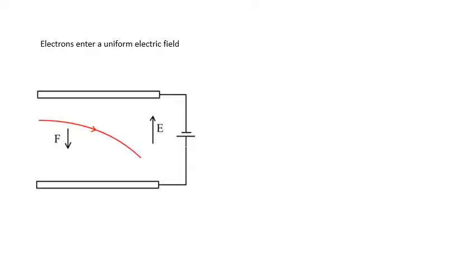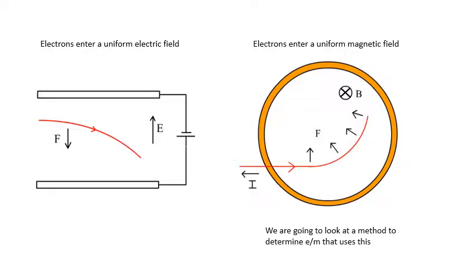Electrons entering a magnetic field will have a circular path because the force is always at right angles to their velocity, so it will be centripetal. The force won't do work, it'll just change the direction of motion.